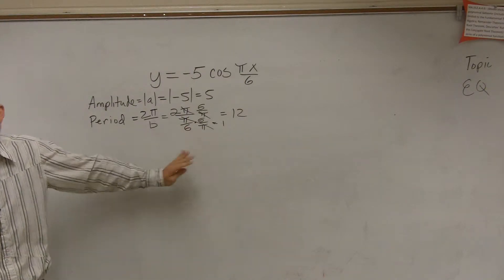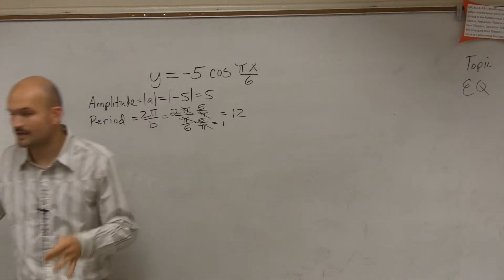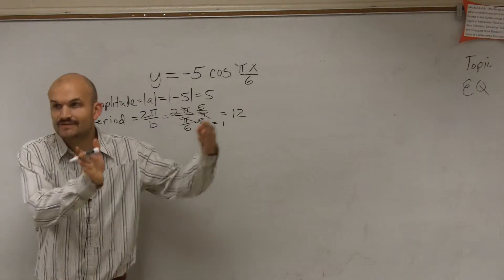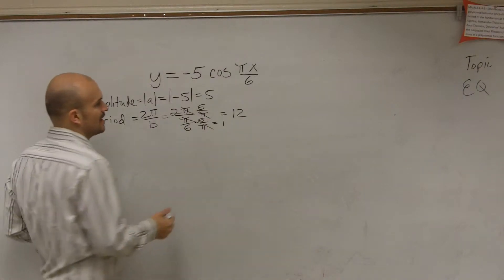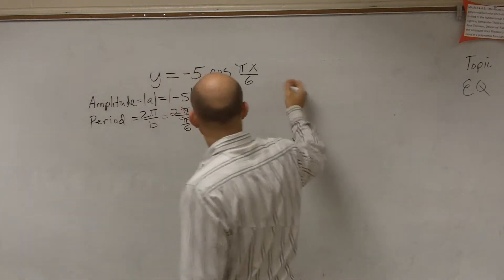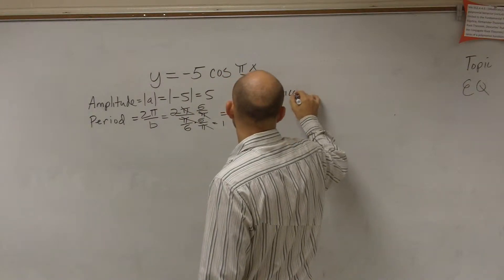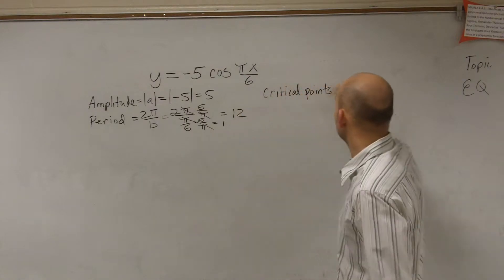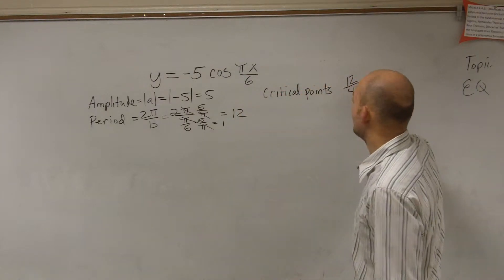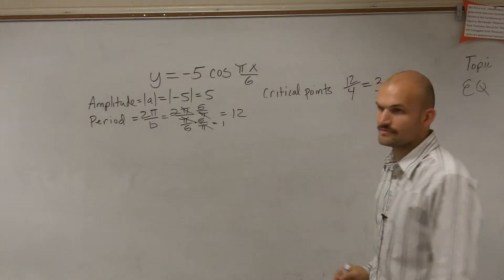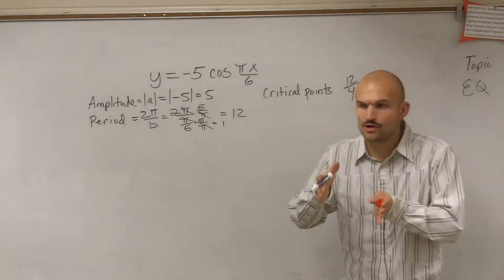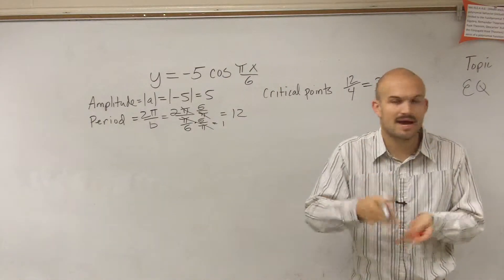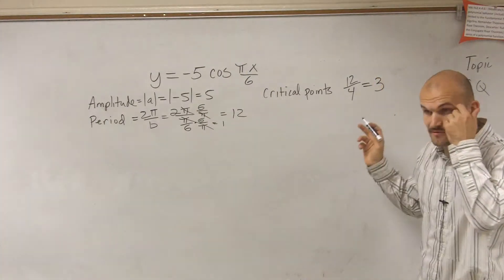Right when I determine what my period is, remember when I talked about the parent graph — we had our critical points, and between every critical point was an even distance. So what I like to do is determine the distance between the critical points. To do that, all you need to do is take your period and divide it by 4. Therefore, I get a distance of 3. That means between each critical point — the x-intercept, max, min — they're all going to have a distance of 3.